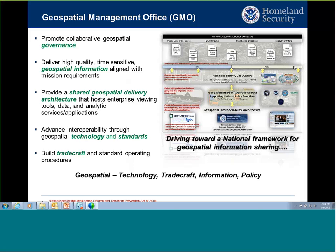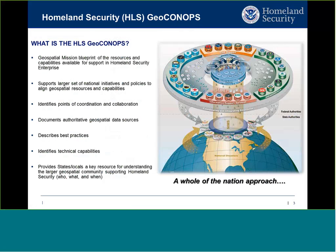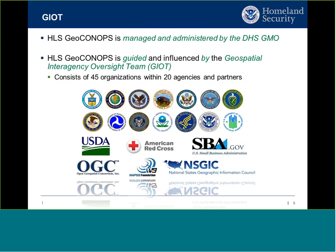One of the things we do within the GMO is manage the Homeland Security Geospatial Concept of Operations. The GeoConOps is a whole-of-nation approach to managing geospatial requirements, authoritative data sources, best practices, and technical capabilities. Most importantly, it provides a resource for understanding what we have at the federal level to support Homeland Security and Homeland Defense missions, and how you would access those during an incident. It's managed by the GMO but guided by the geospatial interagency oversight team, or GIOT.